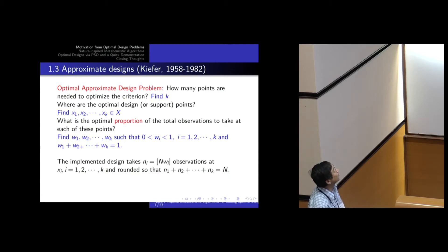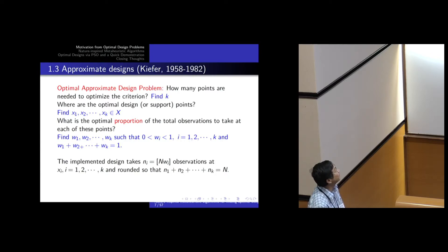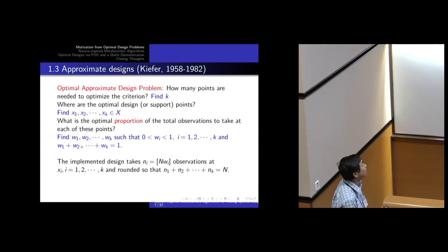The problem reduces to finding K design points X1 through XK and the proportions of total observations to take at each dose. To implement the design, you round up to get an integer number of observations at each point. The previous problem — determining the exact number of observations at each dose directly — is very difficult and defies any general closed-form solution. This proportional approach might seem convoluted, but it leads to a powerful and unified framework.